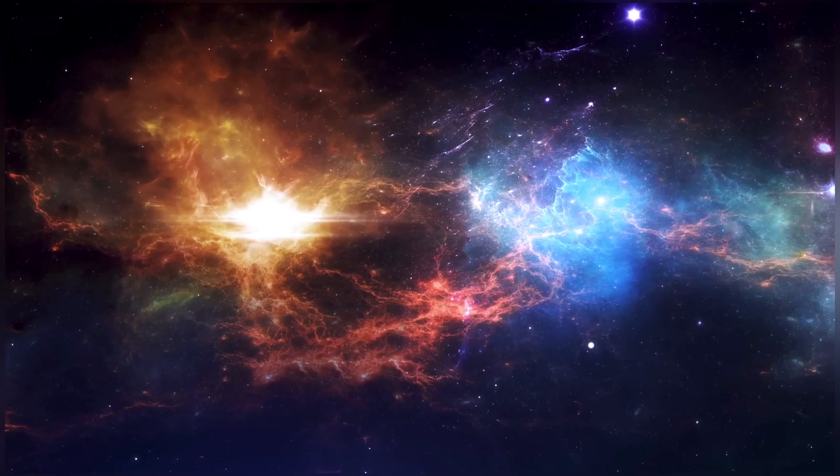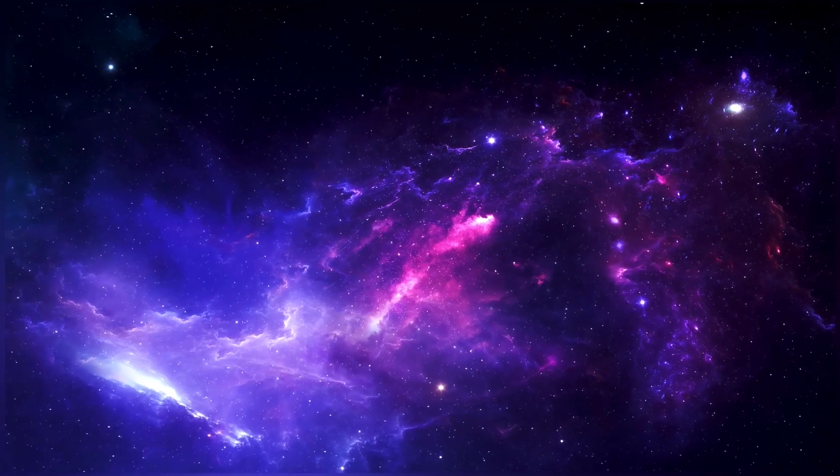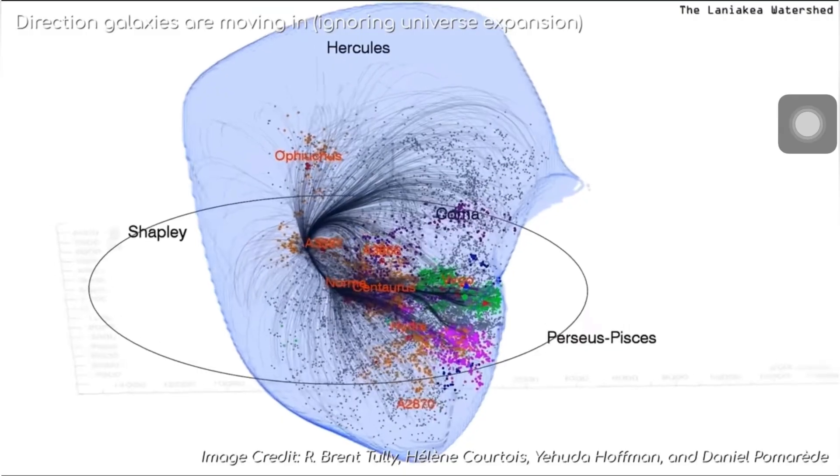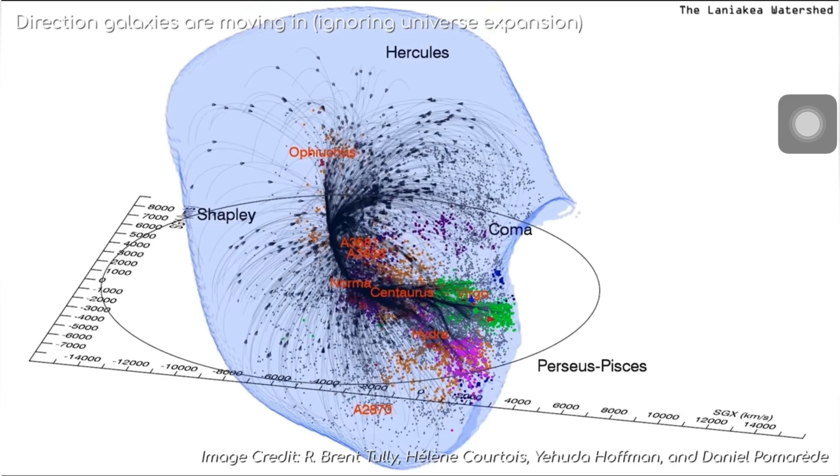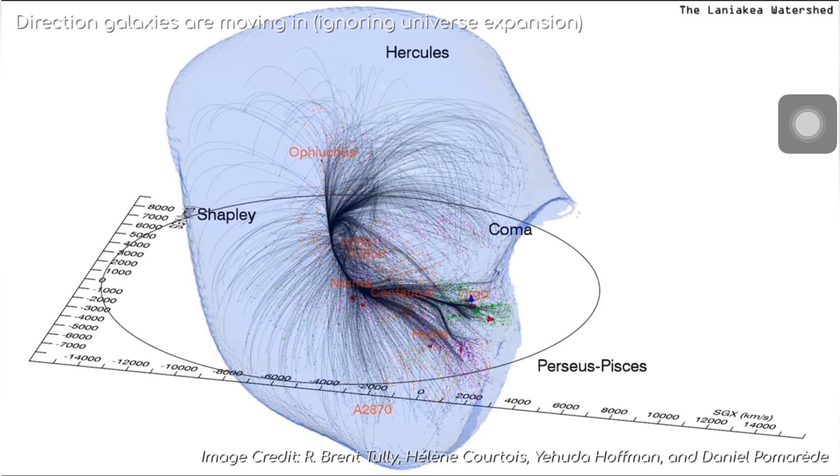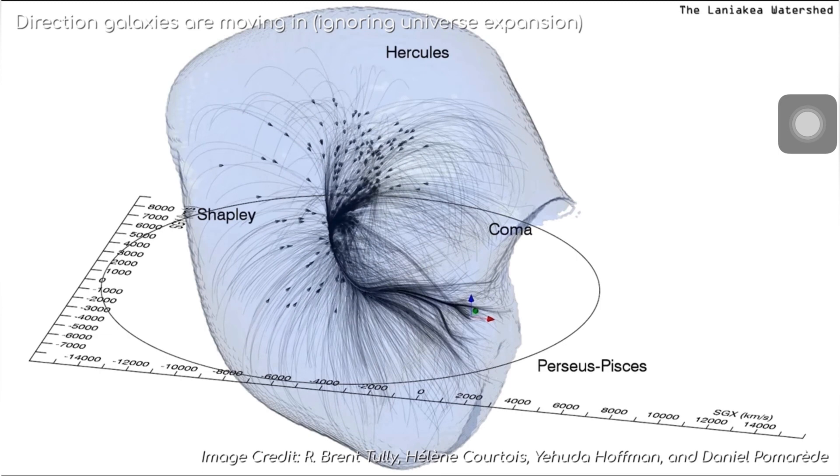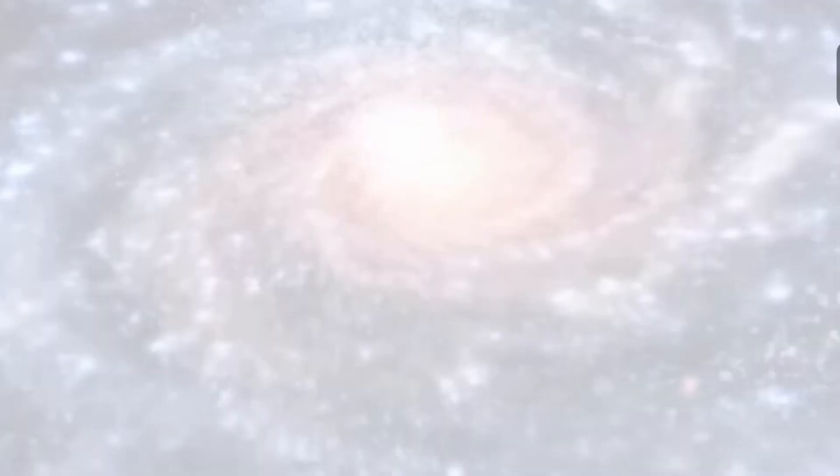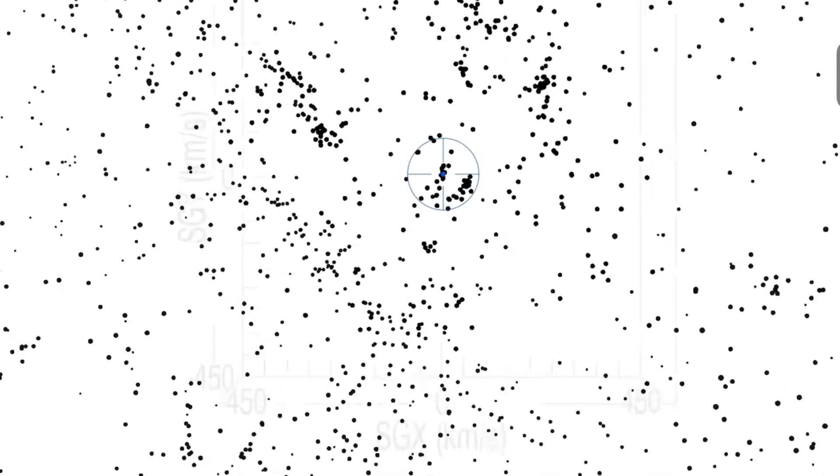Now, brace yourselves for the Great Attractor, a cosmic enigma that challenges the very fabric of space. Nestled beyond the cosmic horizon, this gravitational powerhouse is like a siren's call to galaxies from unimaginable distances. Against the backdrop of universal expansion, galaxies mysteriously gravitate towards this unfathomable point. The Great Attractor is a purported gravitational attraction in intergalactic space and the apparent central gravitational point of the Laniakea Supercluster. This supercluster contains the Milky Way, as well as about 100,000 other galaxies.